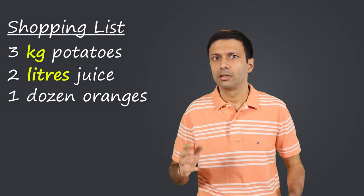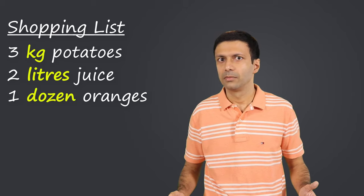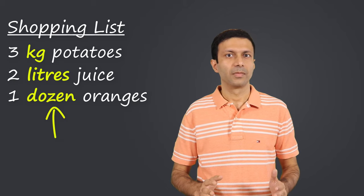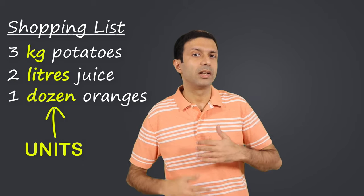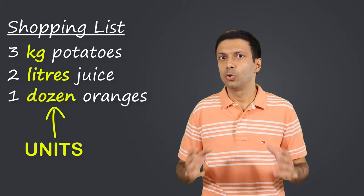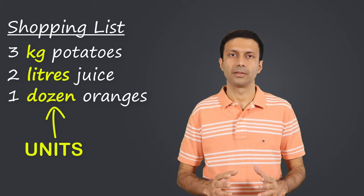Let's say you're going grocery shopping and your shopping list is 3 kg potatoes, 2 liters of juice, and 1 dozen oranges. What are these things in your list — the kg, liter, dozen? That's right, they're units. Units that we use in our everyday lives to measure the quantity of things.